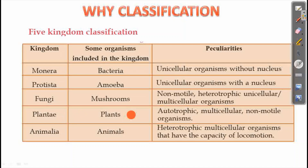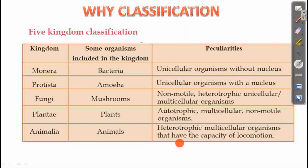Kingdom Plantae includes autotrophic multicellular organisms. Kingdom Animalia includes animals — they are heterotrophic multicellular organisms that have the capacity of locomotion.